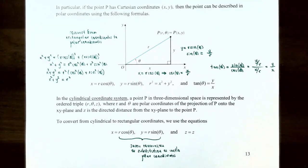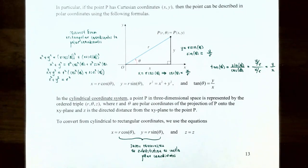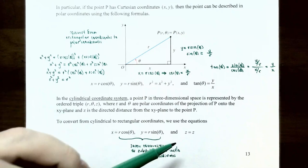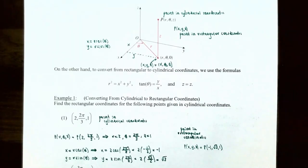That's a review of polar coordinates. In the cylindrical coordinate system, a point P in three-dimensional space is represented as an ordered triple (r, θ, z). r and theta are exactly the same as in polar coordinates applied to the projection of the point onto the xy-plane, and z is the directed distance from the xy-plane to the point P. To convert from cylindrical to rectangular coordinates, x equals r cosine theta, y equals r sine theta, and z stays as z.